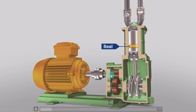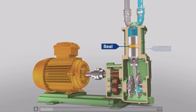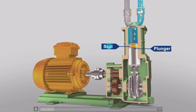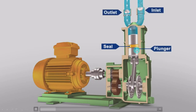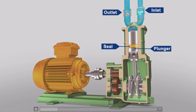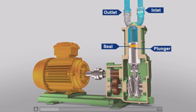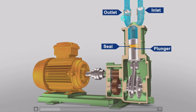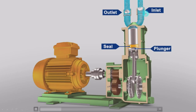The single acting plunger pump is run by a motor, where the rotary motion is converted into reciprocating motion. There is a high pressure seal inside which the plunger reciprocates. During reciprocation, fluid enters through the inlet check valve and is discharged at the outlet. These check valves operate according to the pressure.